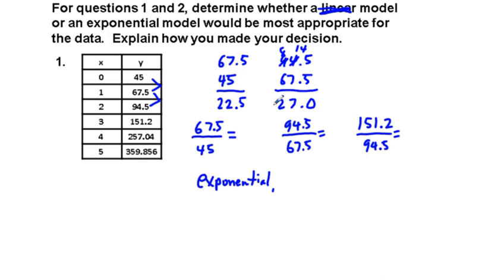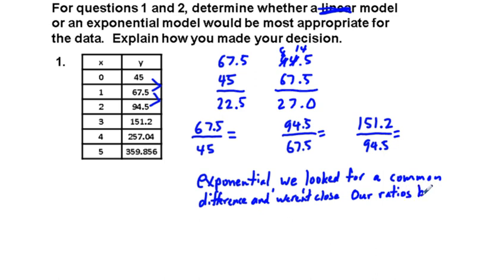Let's do another one. We have 151.2 divided by 94.5, so we get 1.6. We'll just try one more. 257.04 divided by 151.2 gives us 1.7. So you can see kind of in that range between 1.4 and 1.7 and thereabouts.